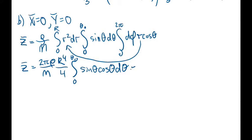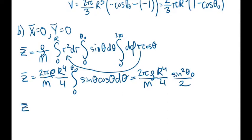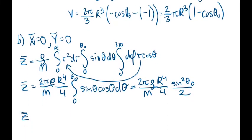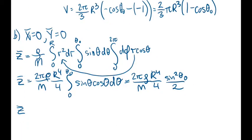That equals sine squared theta over 2. In this case it's sine squared theta of theta naught minus sine squared theta of 0, which is 0, so we'll just change this to theta naught. And then let's plug in the value for rho, which we found was 2 thirds pi R cubed times 1 minus cosine theta naught.